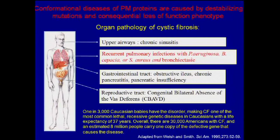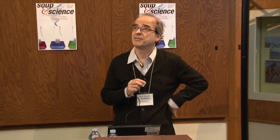My laboratory is interested in conformational diseases, which are caused by mutations destabilizing various plasma membrane proteins that are critical in cellular physiology. We are particularly interested in the cystic fibrosis protein, which is called CFTR, because this is one of the most prevalent genetic diseases in the Caucasian population. Its prevalence is one in 3,000, with a life expectancy at the moment of 37 years — so it's a devastating disease.